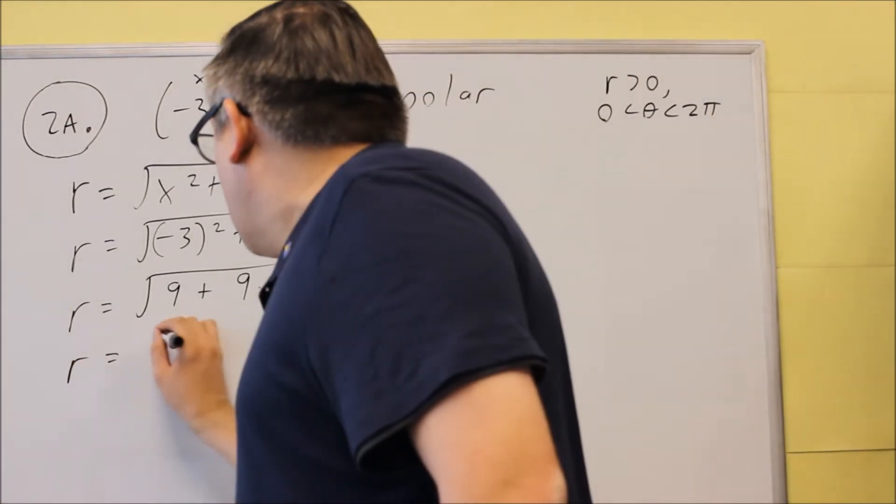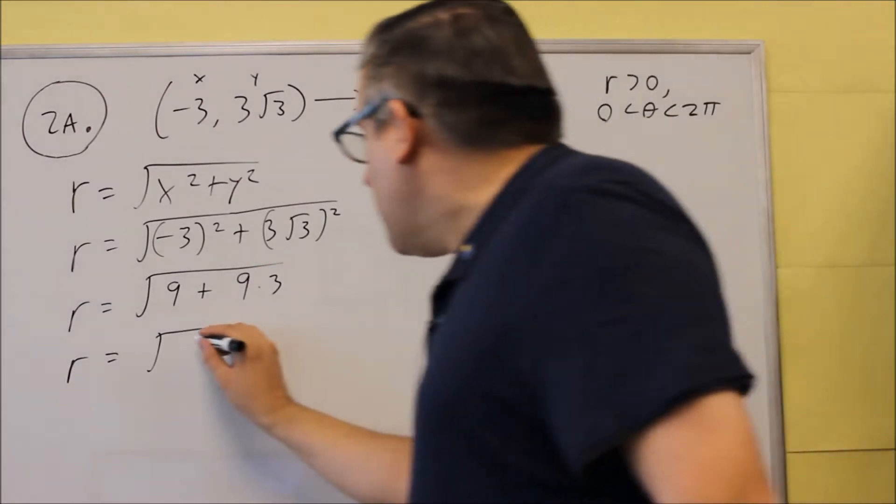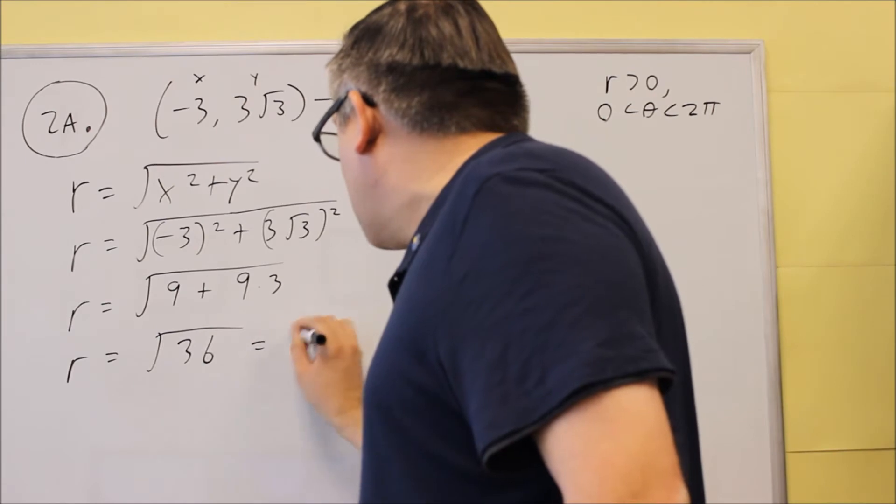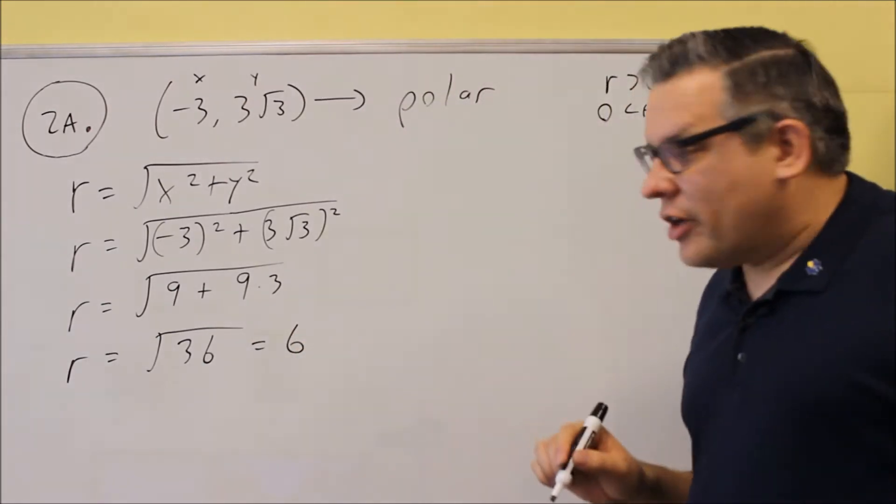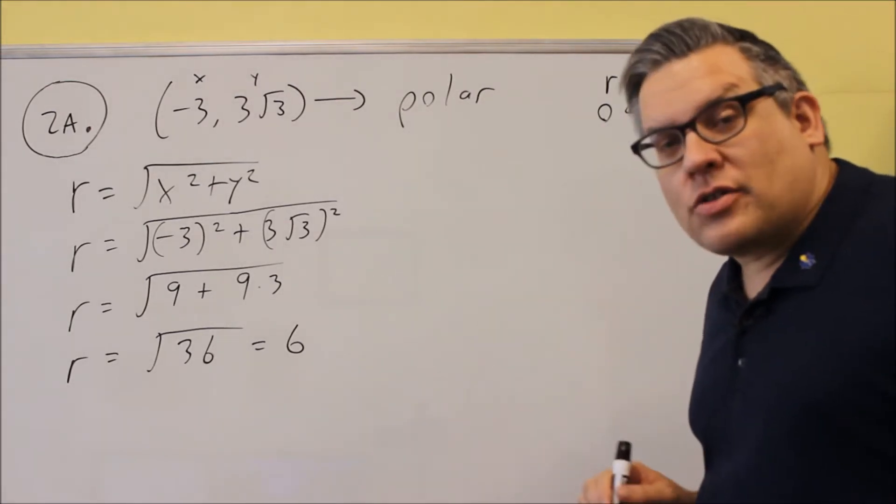Let's simplify that. We get nine plus 27, which means you're going to get square root of 36, which is 6. So now I know that the R is 6. That's the first part of my answer.